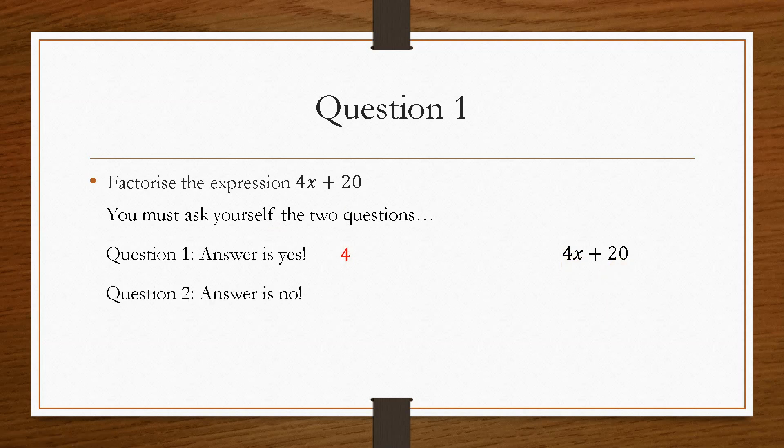Question two, which was, is there any letters common to both? The answer is no. Because the 4x here has an x term, but the 20 doesn't have an x. So x is not common to both of these terms. So our highest common factor is 4. Now when you solve common factor questions, you divide each term individually by your known highest common factor. So in this case, it would be 4x divided by 4, which is x, and then 20 divided by 4, which is 5. And that's the basics and fundamental outline of how to solve common factor questions.